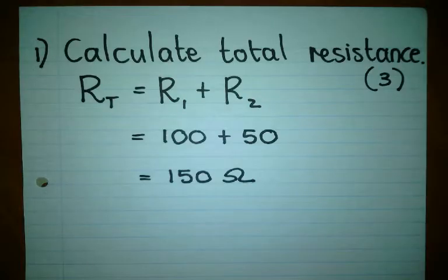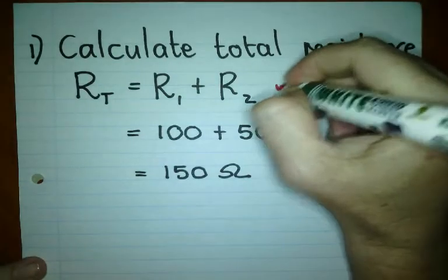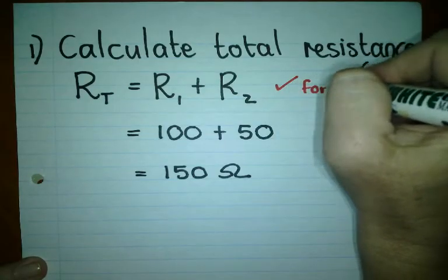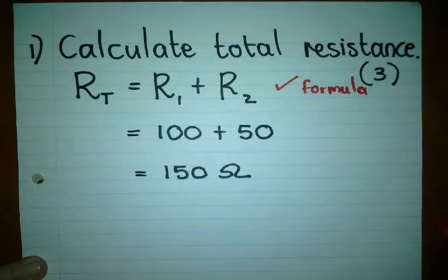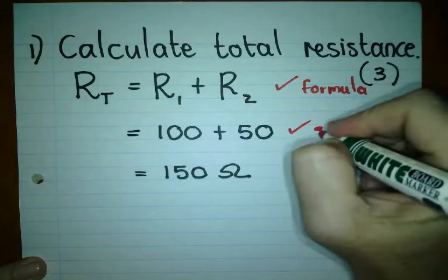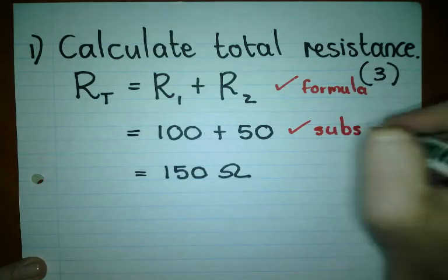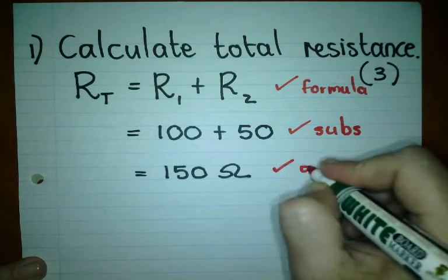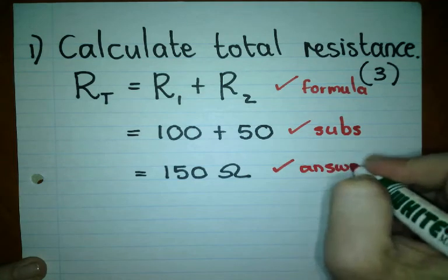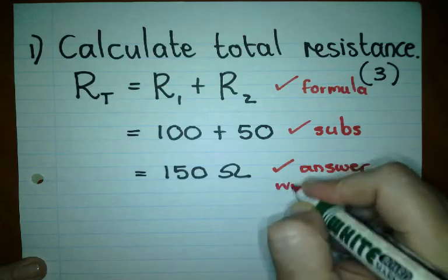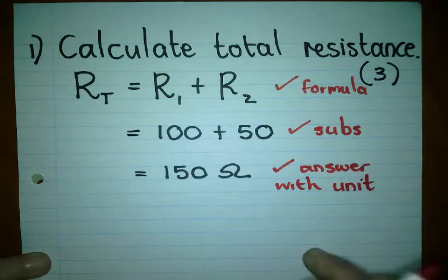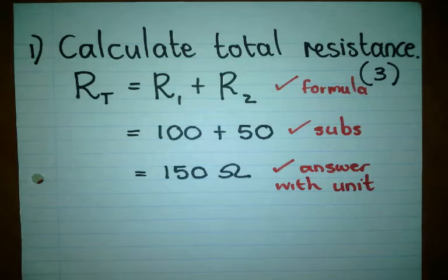So where do the marks go? The first mark goes for the formula. The second mark goes for the substitution. And the third mark goes for the answer with the unit. Very important — if your answer does not have a unit, your answer is considered to be wrong.